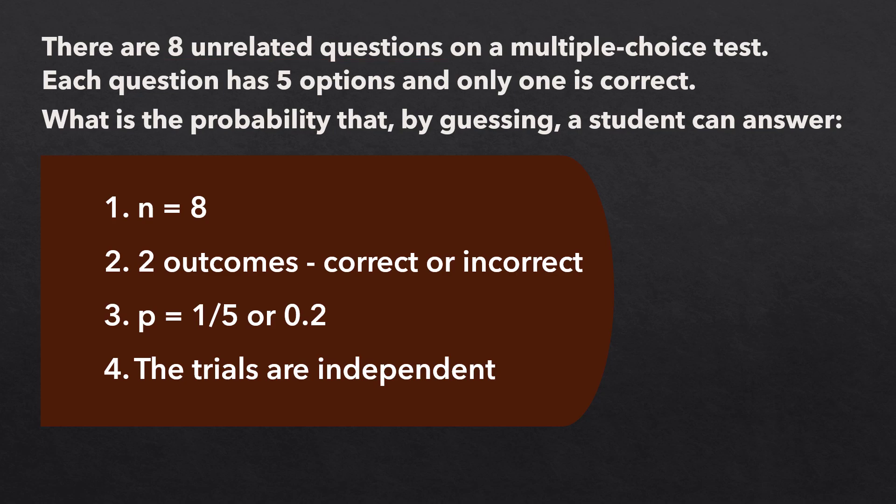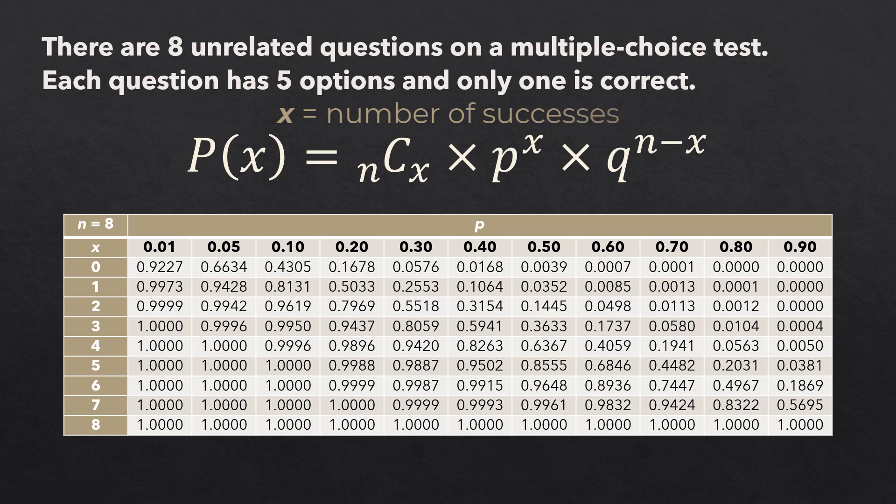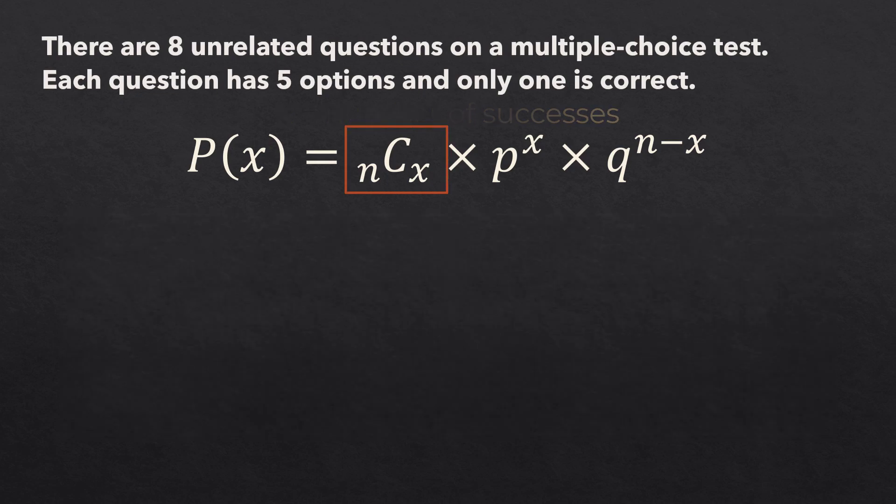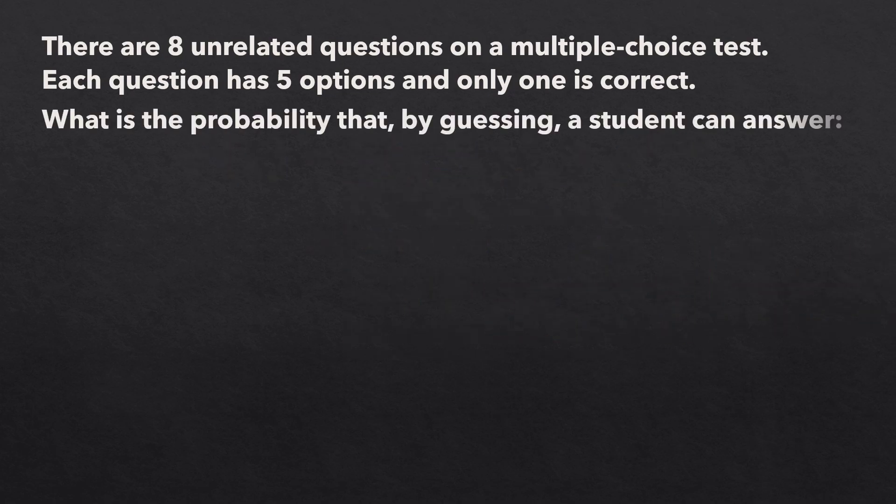I will be showing how to solve the problem using both the binomial formula and the cumulative binomial distribution table. Note that nCx here represents combination, which you can find on most scientific calculators and can also be calculated using this formula. Now, n equals 8, p equals 0.2, and q equals 0.8.